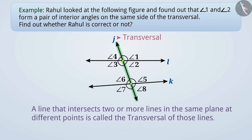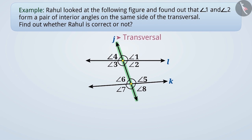While intersecting, this transversal forms a total of eight angles. Among those angles, we need to find out whether angle 1 and angle 2 form a pair of interior angles on the same side of the transversal or not.